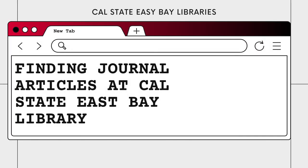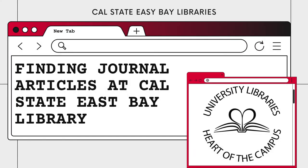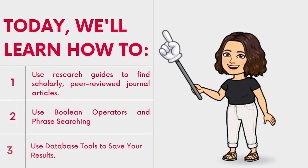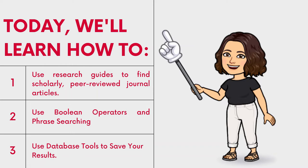Welcome. In today's tutorial, we are going to be learning about searching for journal articles through the library homepage and the other databases available to you through the library. My name is Trix, a library student ambassador, and today we'll be covering how to use research subject guides on the Cal State East Bay Library website to find scholarly articles, using Boolean operators and phrase searching to narrow your search results, and how to use the database tools to save your results.